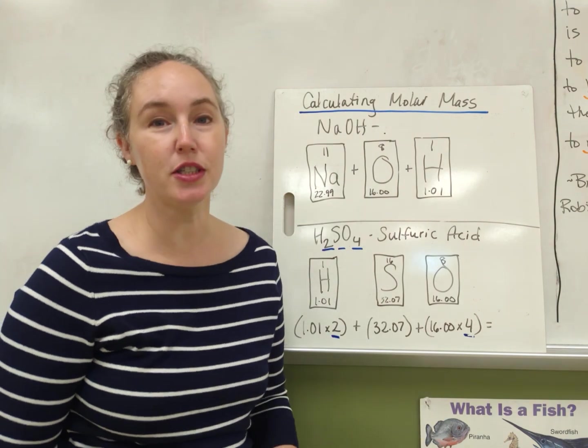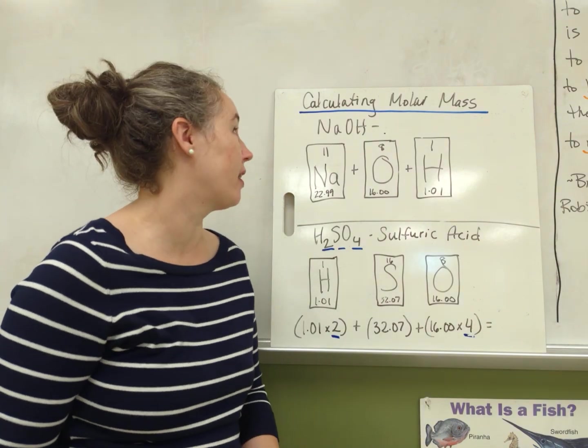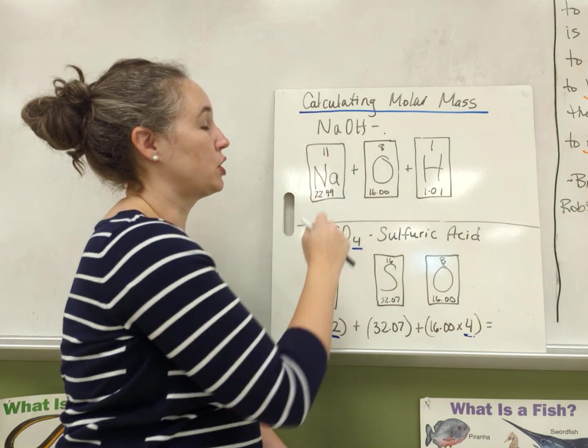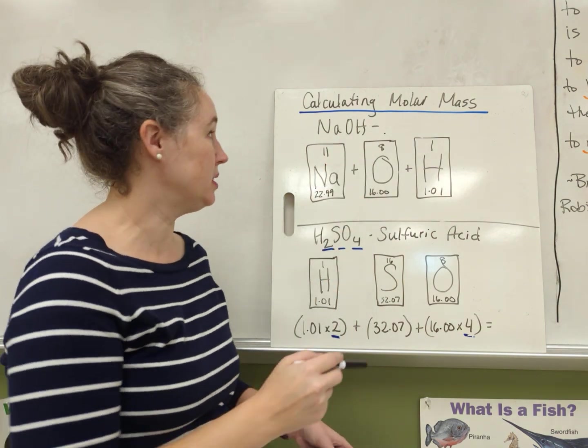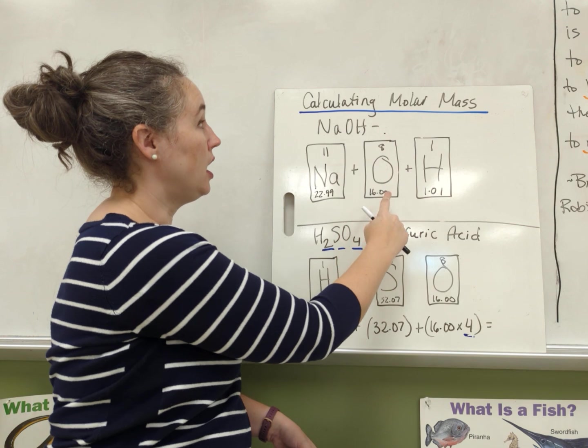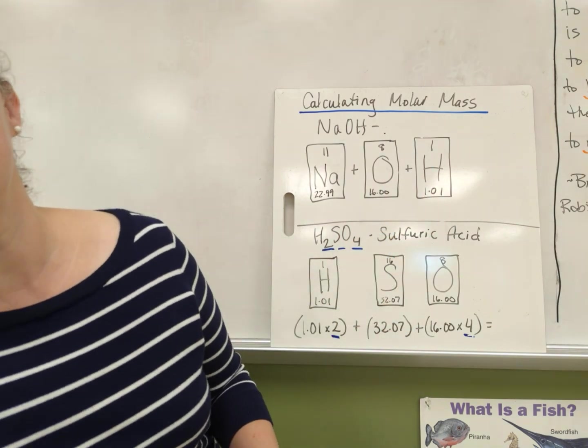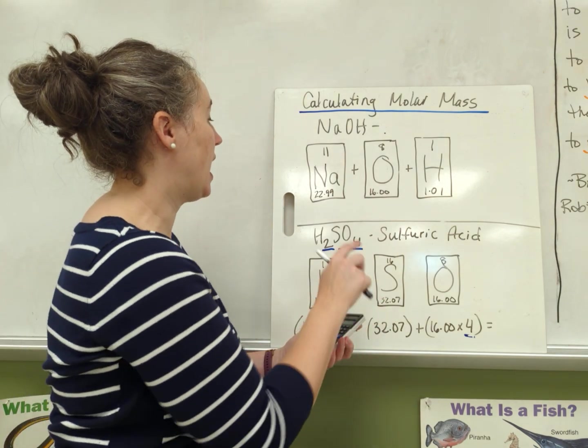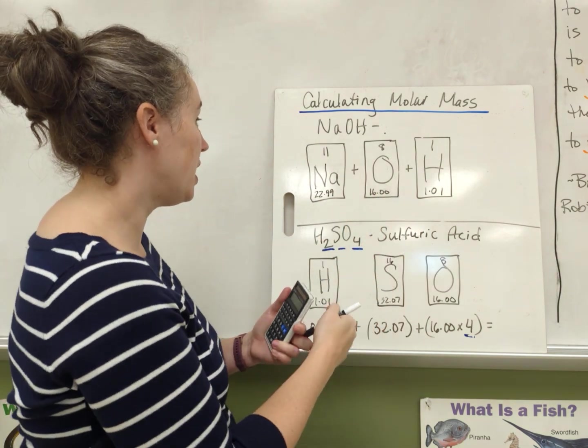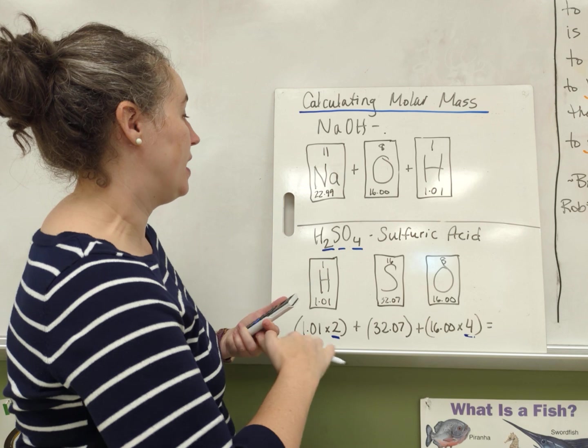Alright, so my first example is sodium hydroxide, NaOH. That's made of three different elements: sodium, oxygen, and hydrogen. And there's one of each. So I look at the numbers at the bottom, and I'll add those up.